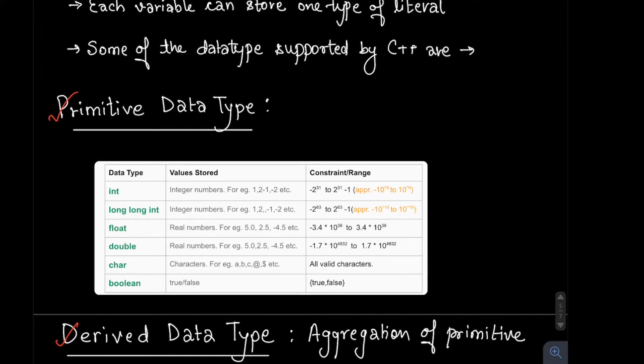We have a list of primitive data types. These are not all the data types supported, but a list that will be used the most. We have integer, long long int, float, double, char, and boolean.